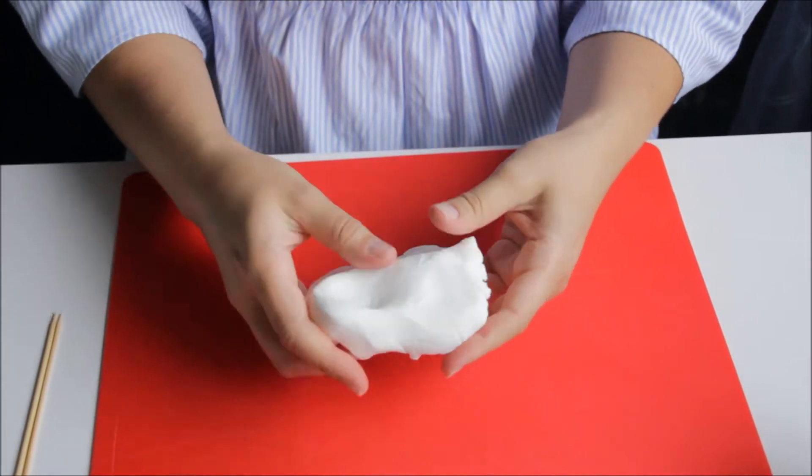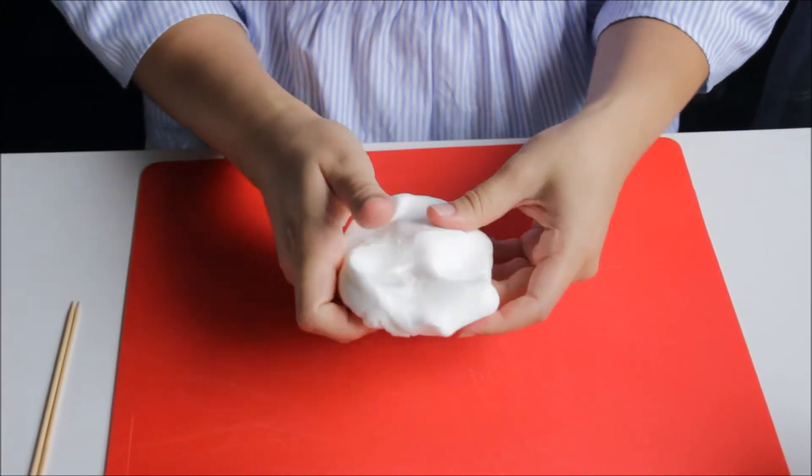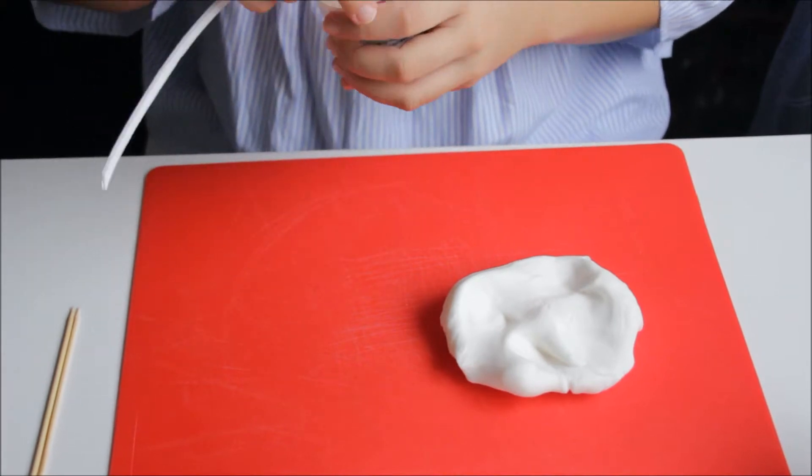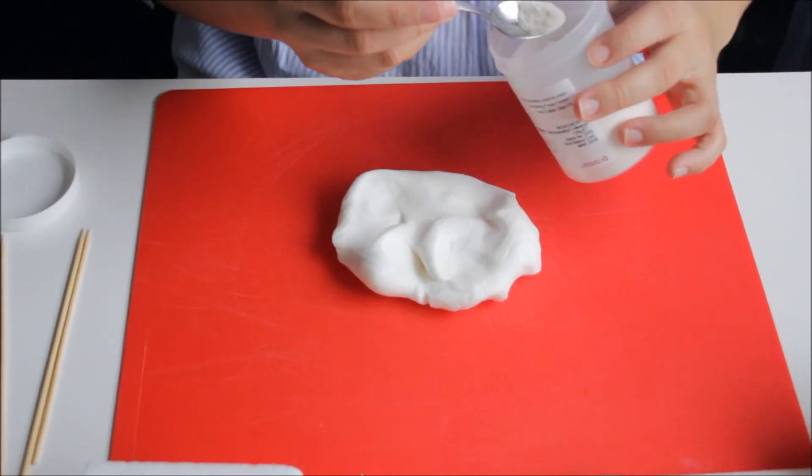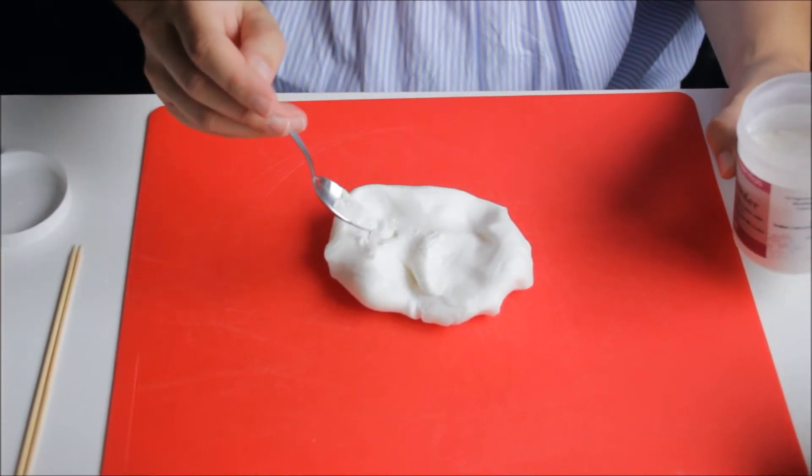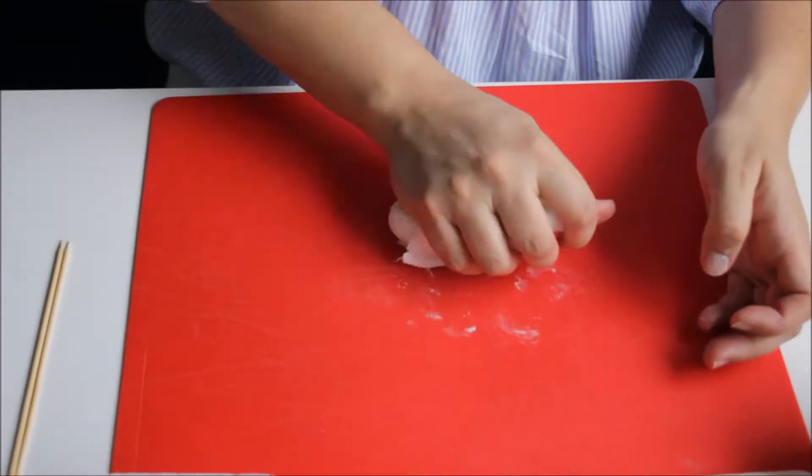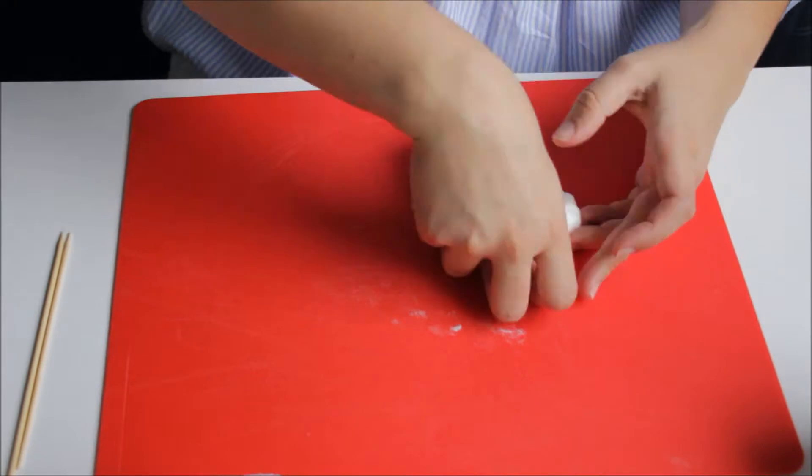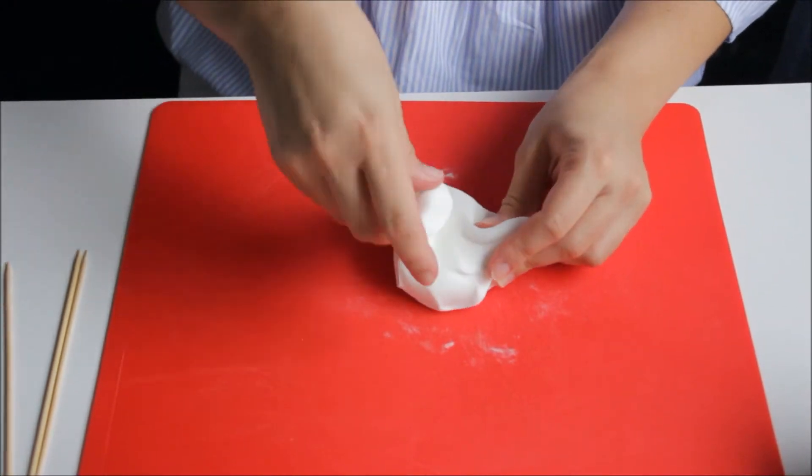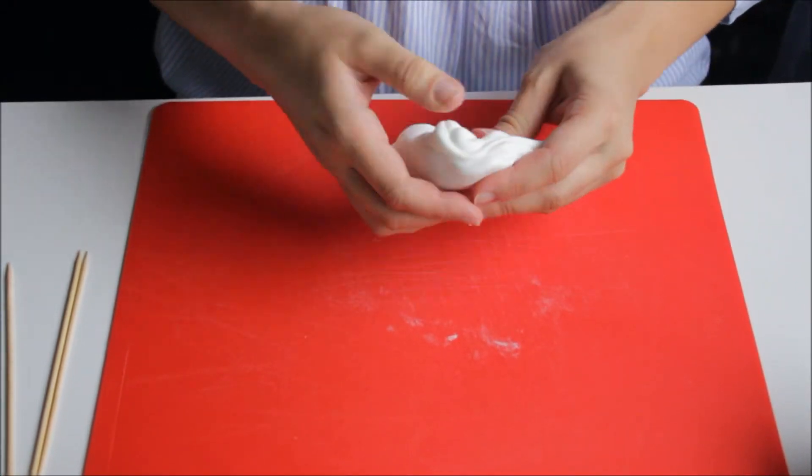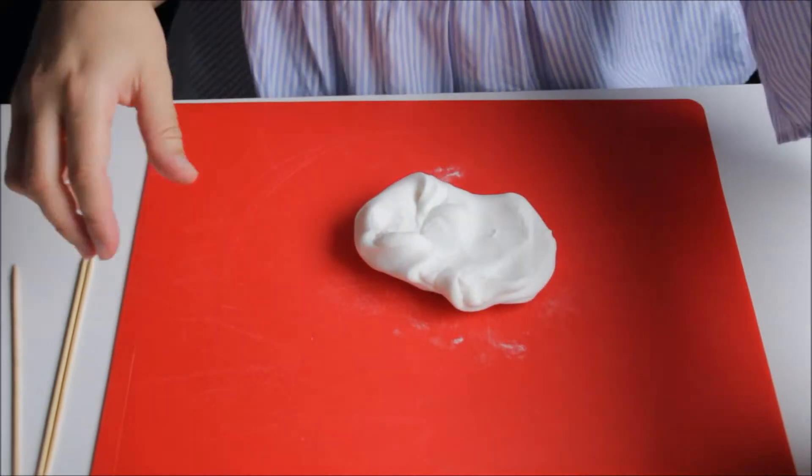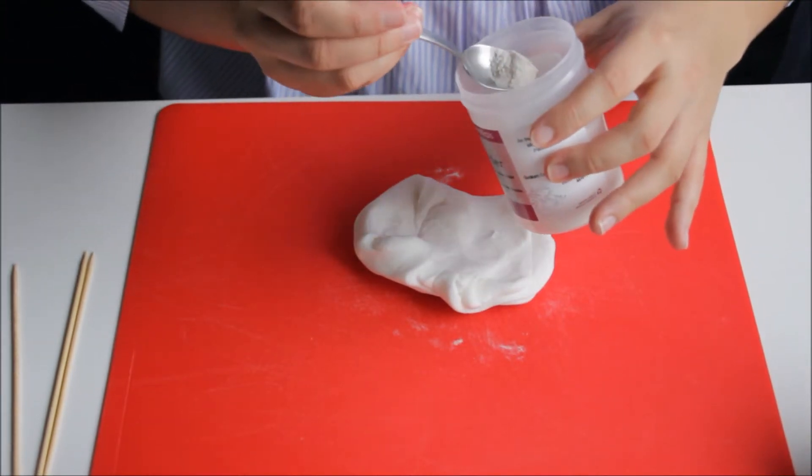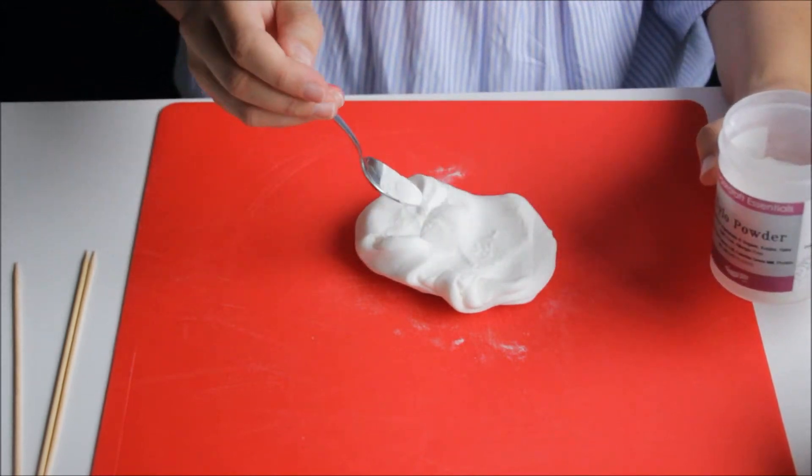Because fondant is very soft as it is, I'm going to add some Tylose powder. So I'm going to add about half a teaspoon first. I think I'm going to add another one because I want to construct a cake right away. So I'm going to add another half, about half a teaspoon full.